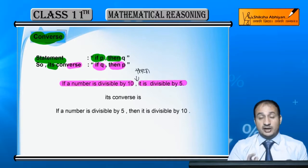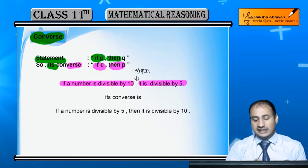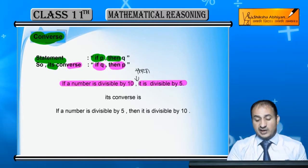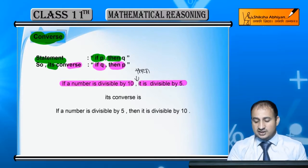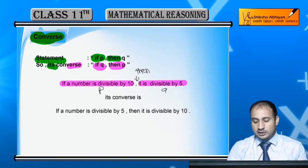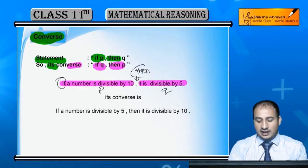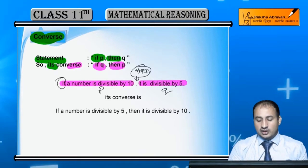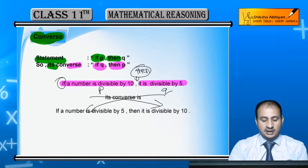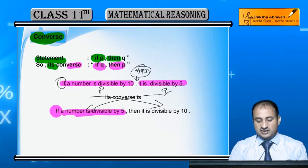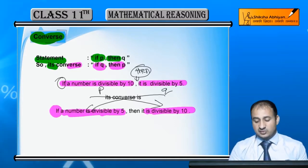Its converse is: If a number is divisible by 5, then it is divisible by 10. You can see the 'if' and 'then' parts have been swapped.